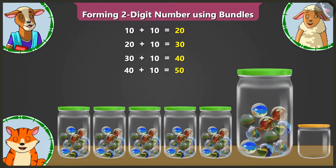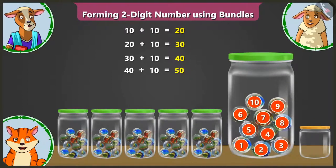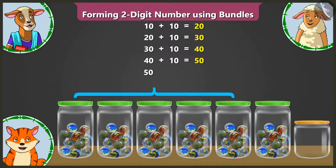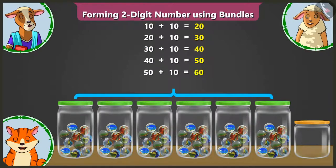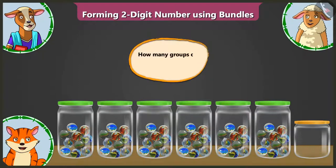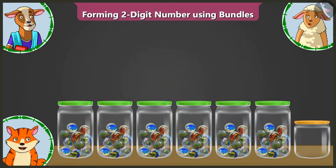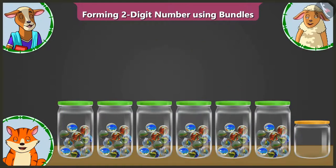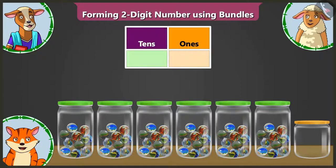This sixth jar also has ten marbles. This makes it ten and ten, twenty; twenty and ten, thirty; thirty and ten, forty; forty and ten, fifty; fifty and ten, sixty — six groups of tens. You tell me, Lily — how many groups of tens do we have? We have six groups of ten marbles each. That's right. This is why we will write six in the tens box.